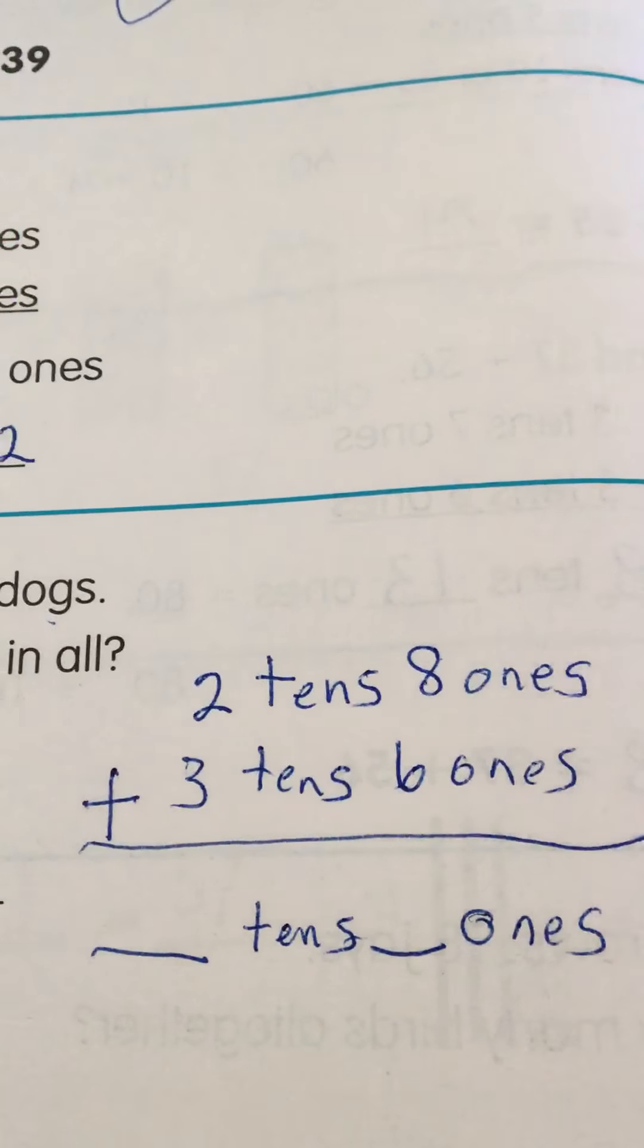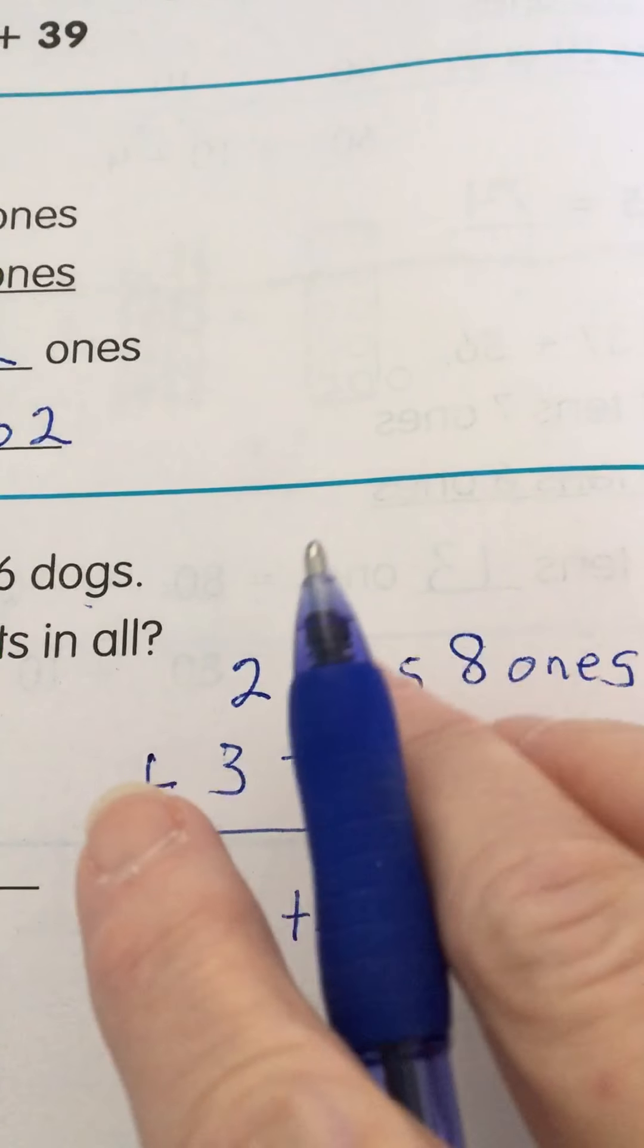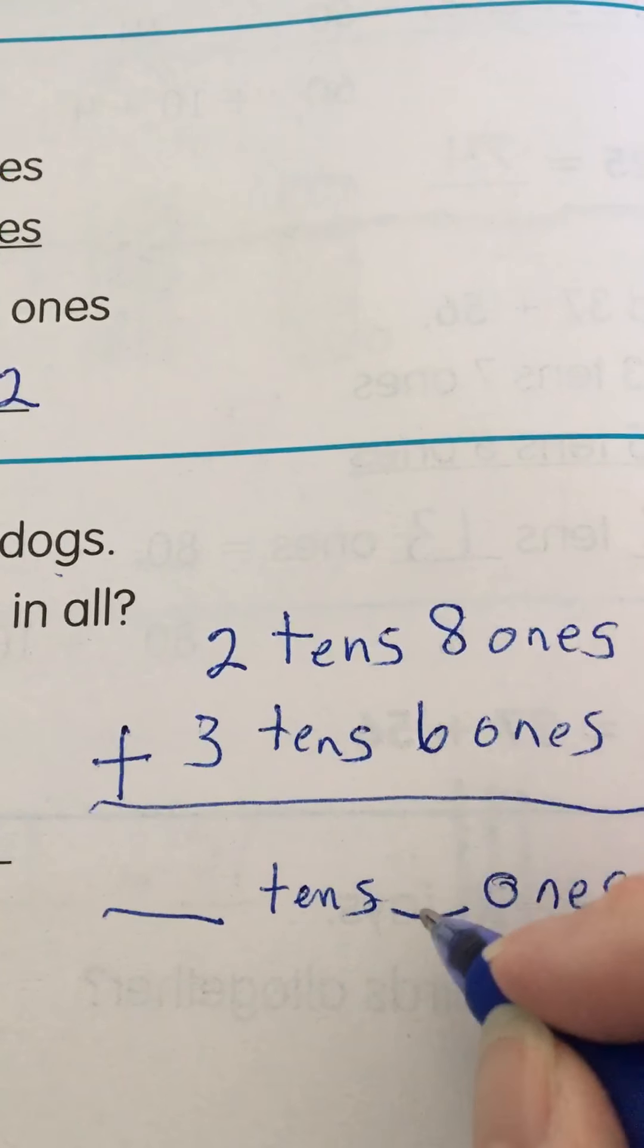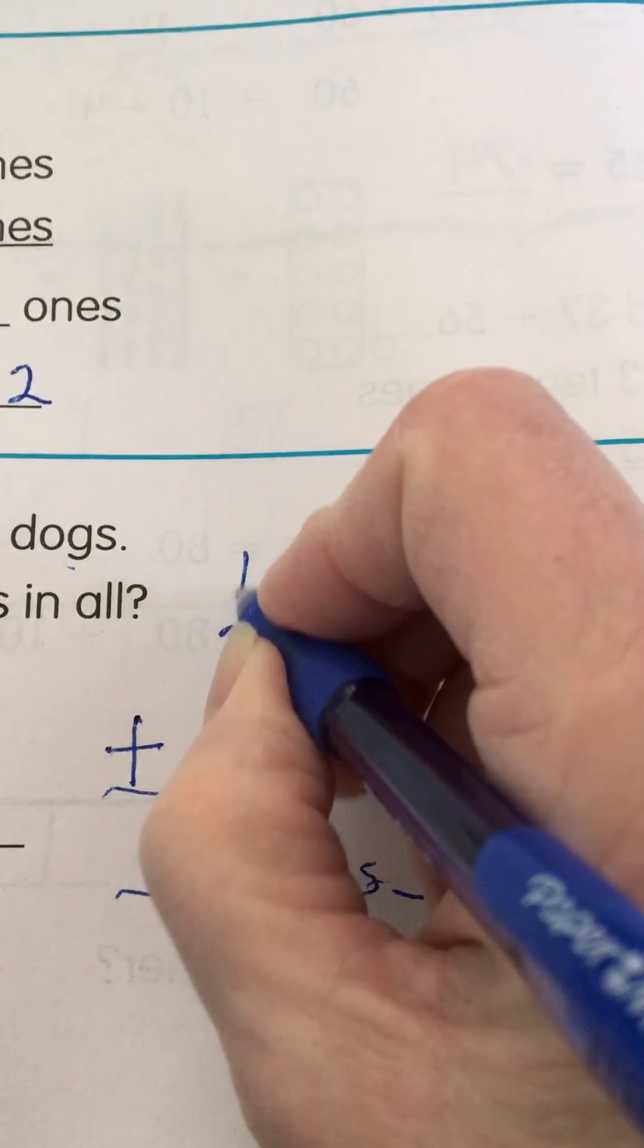Put eight in your head and count on six. Eight, nine, ten, eleven, twelve, thirteen, fourteen. So fourteen is four ones with one ten.